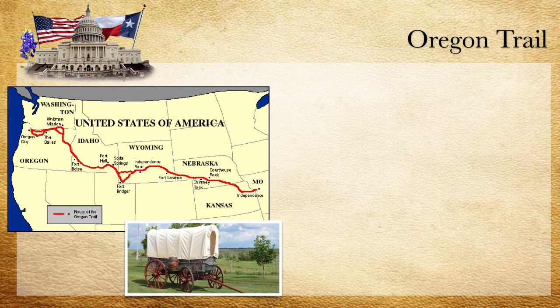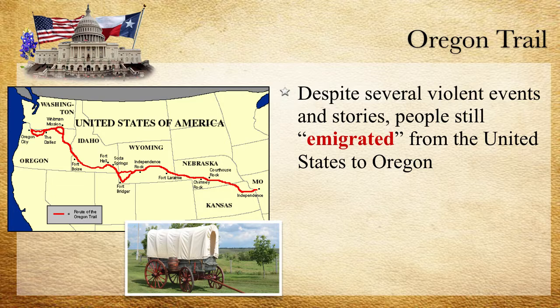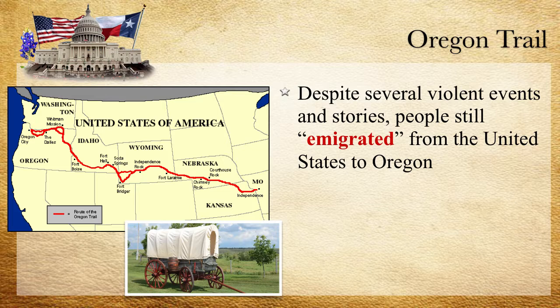How did they get there? They used a trail leading out to the Oregon Territory from known territory in Missouri — this is known as the Oregon Trail. Despite several violent events, people still emigrated from the United States. A quick vocabulary note: emigrate and exit both start with an E, so emigrate means to leave your country. Immigrate and 'in' both start with an I, so immigrate means to come in. Oregon wasn't a state at this time — it was just a territory, not part of the United States.